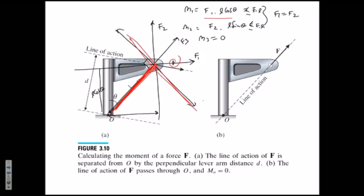Why is counterclockwise positive? It's a convention — we use the right-handed coordinate system. In that system, i-hat cross j-hat gives k-hat, and k-hat points upward. If you used the left-handed system, counterclockwise would be negative and clockwise positive. We stick with the right-handed system consistently across all classes. Some books use the left-handed system where both are flipped.